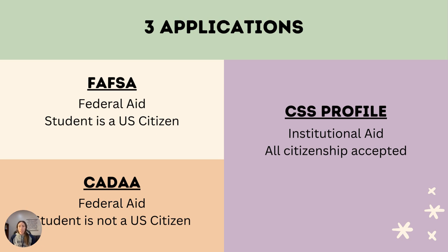There are three financial aid applications for families to be aware of: the FAFSA, California Dream Act or CADA, and CSS Profile. The FAFSA provides aid from both state and federal governments, and students must be U.S. citizens to use this application. The CADA also provides state and federal aid, and only non-U.S. citizens may complete this application. The CSS Profile provides institutional aid from each individual college, and all applicants regardless of citizenship should complete the CSS Profile if applicable. This application may be required in addition to the FAFSA or CADA, depending on the school a student is applying to.